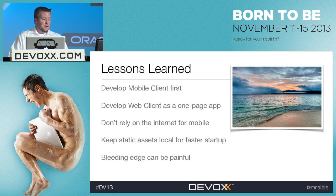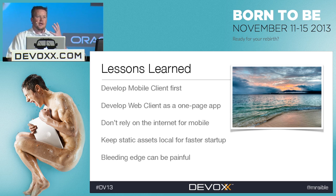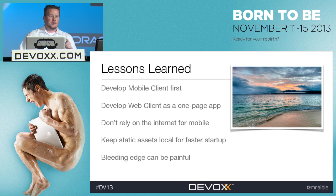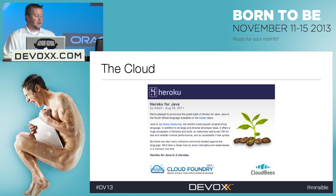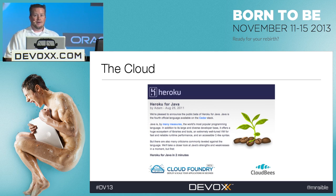Lessons learned from that mobile experience: develop your mobile client first, do it as a one-page app, don't rely on the internet if possible, and keep your static assets locally. When I packaged my PhoneGap application I still referred to CSS and JavaScript on the server, which didn't work well at all. More than anything, I learned the bleeding edge can be painful — only write it if you're getting funded for it.